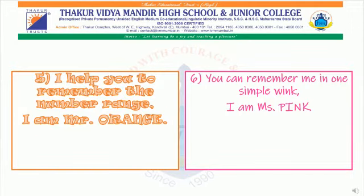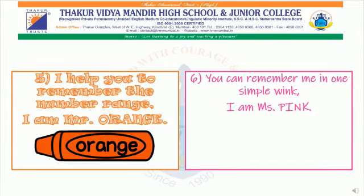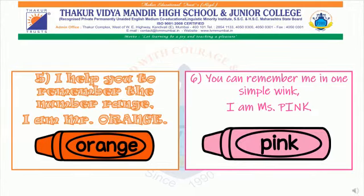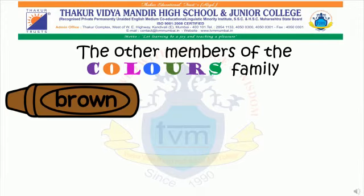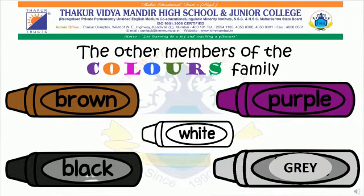I help you to remember the number range — I am Mr. Orange. You can remember me in one simple wink — I am Miss Pink. Let me introduce you to the other members of the colours family: Brown, Purple, Black, Grey, White.